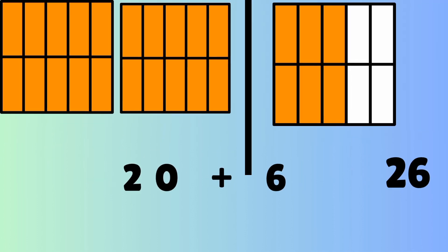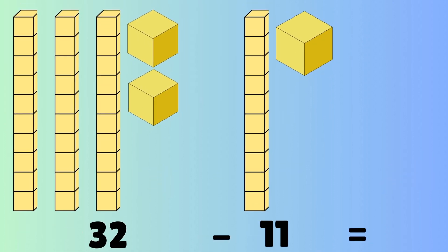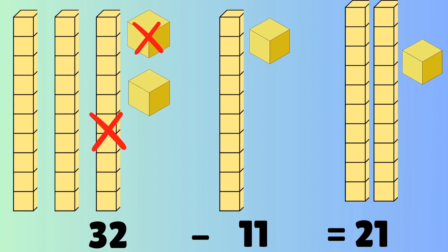Next up, there's two different blocks of ten. There's ten orange squares in each square, so ten and ten is twenty, plus six is twenty-six. Now we're going to subtract. Thirty-two minus eleven. There's three blocks of ten plus two individual cubes minus eleven. So if you mark off eleven — one block of ten and one cube — it leaves two blocks of ten and one little cube. So it's twenty-one. Thirty-two minus eleven is twenty-one.